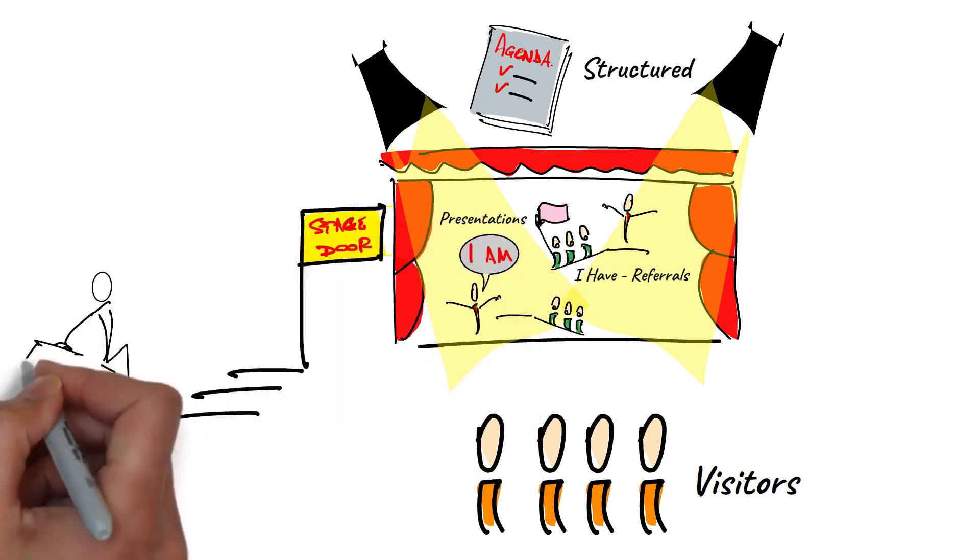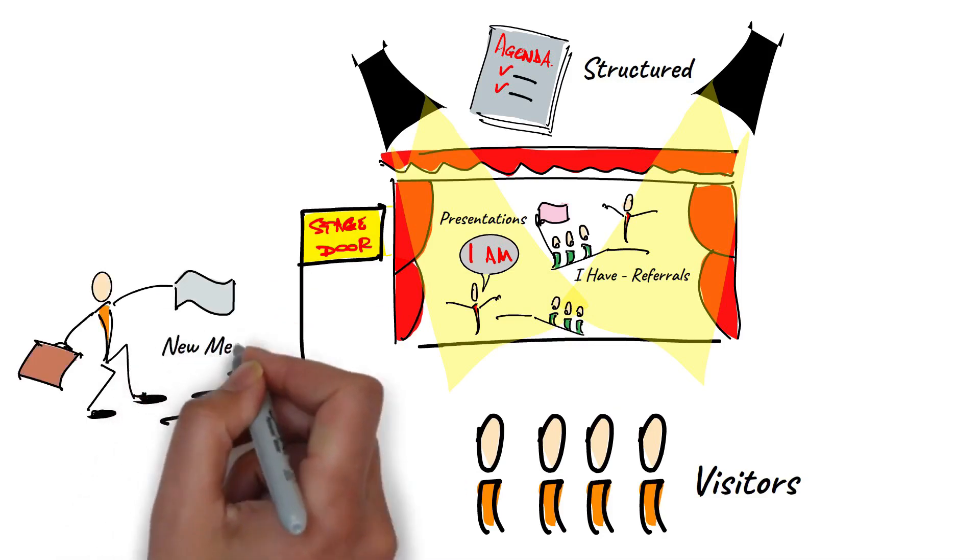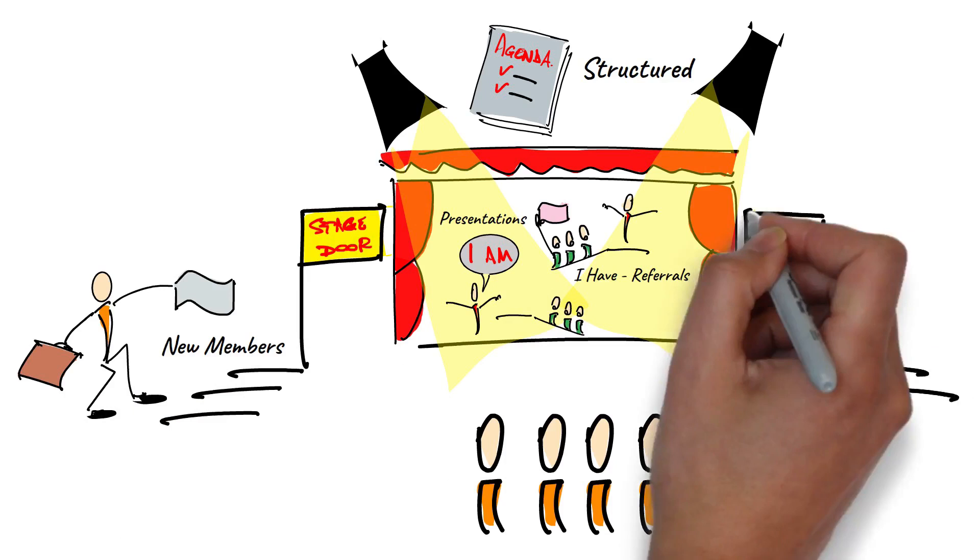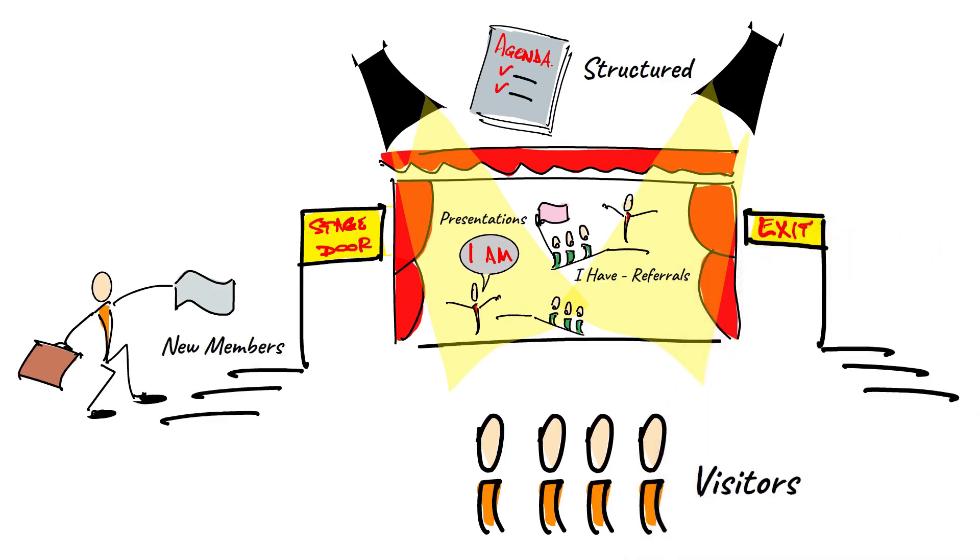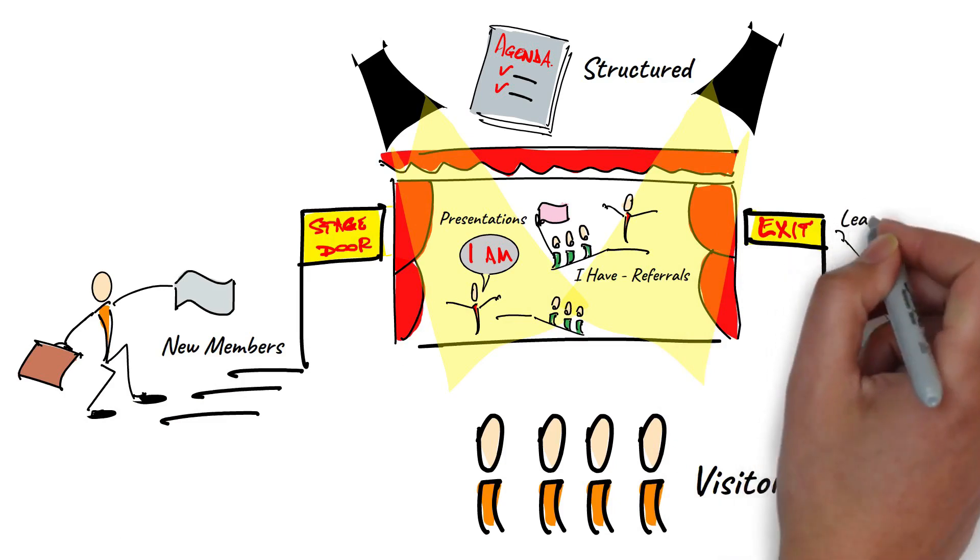Visitors apply for membership, and once their membership is approved, they become new members. At the same time, existing members leave the chapter for a variety of reasons. So one has this constant movement of new members in and existing members leaving the chapter.